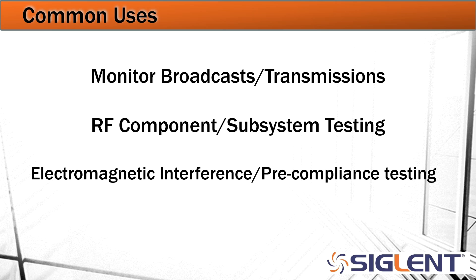Then we've got electromagnetic interference and pre-compliance testing. This is a little bit more specialized — for companies or people that happen to be ready to sell their product. Governments regulate the amount of RF output over particular frequency ranges that a product is allowed to emit. We want to make sure we're underneath that limit line before selling, because non-compliance can lead to recalls, fines, and other problems.